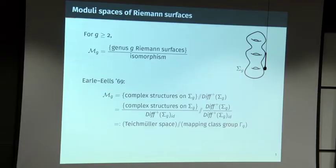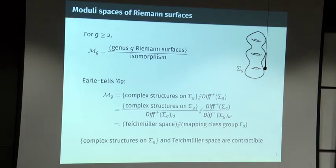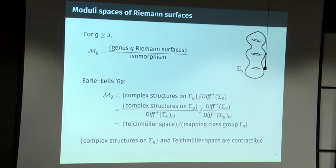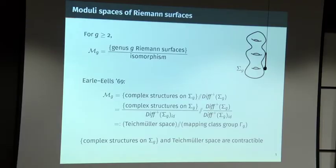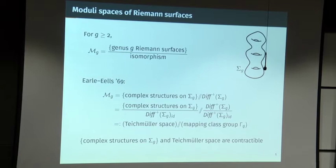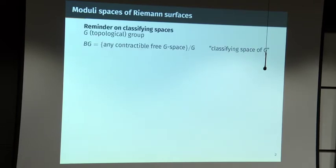There are two facts: one not so difficult and one rather difficult — that the space of complex structures and Teichmüller space are both contractible. For the space of complex structures: a complex structure on a manifold is determined by the induced almost complex structure on its tangent bundle, and in the case of surfaces that's a bijection. An oriented two-dimensional vector space has a contractible space of complex structures. Teichmüller space is also contractible — in fact homeomorphic to Euclidean space of dimension 6g − 6.